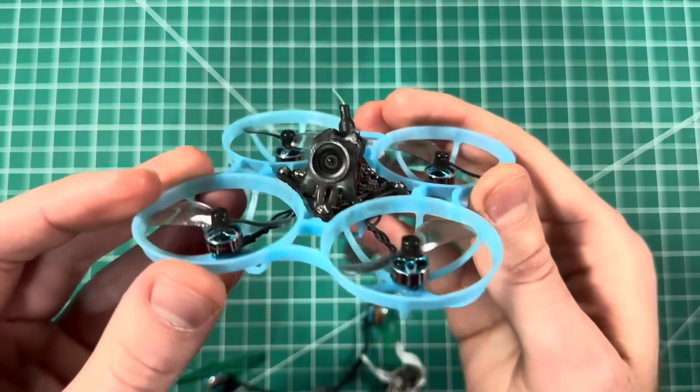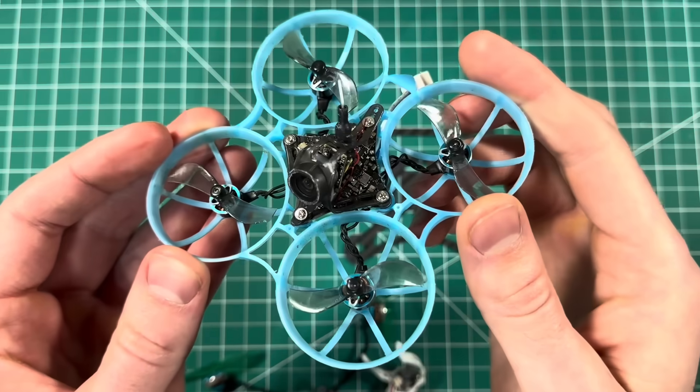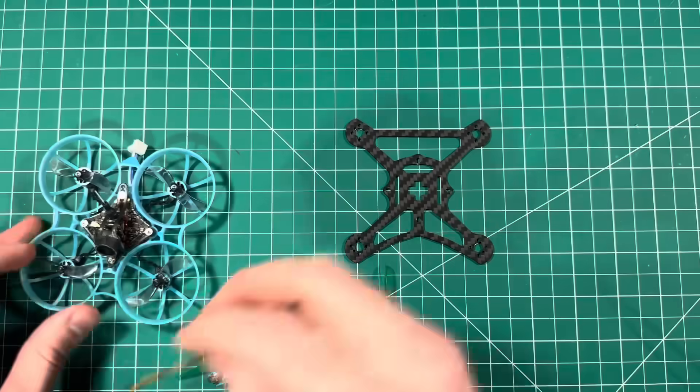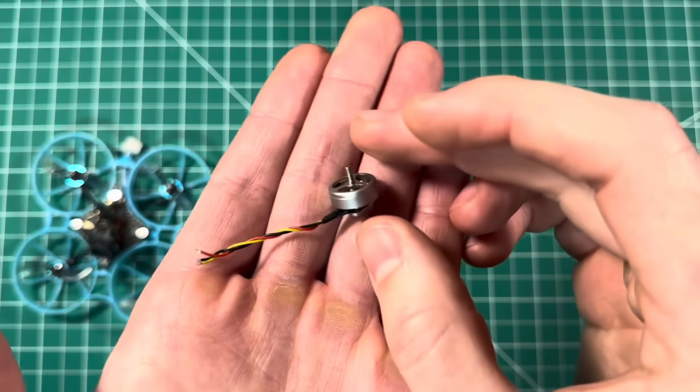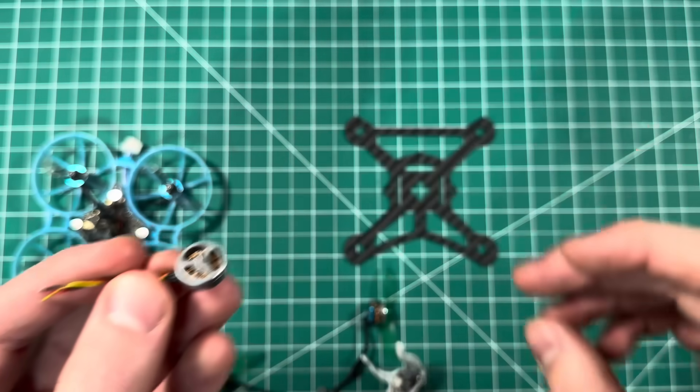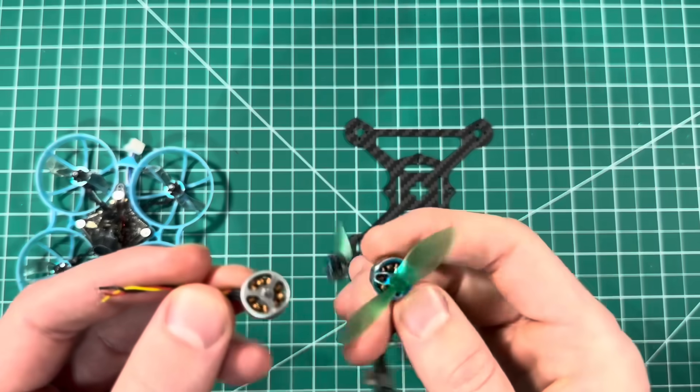If you have a smaller Tiny Whoop like a normal 75 millimeter or even a 65 millimeter Tiny Whoop, you're still in luck because I have found these generic 15,000 KV 1103 motors that perform very similarly to the 1102.